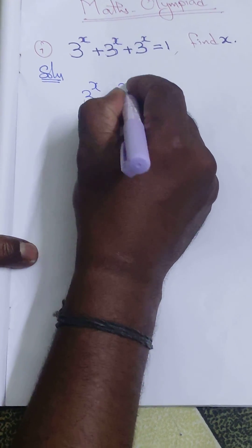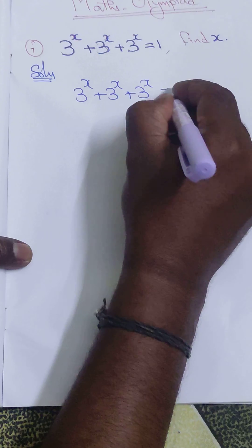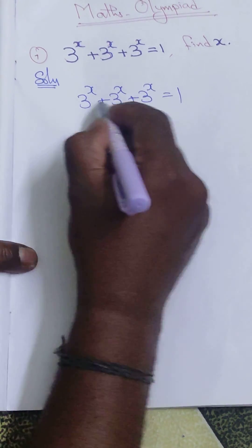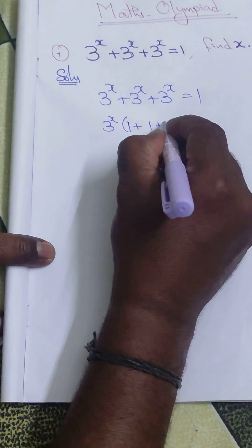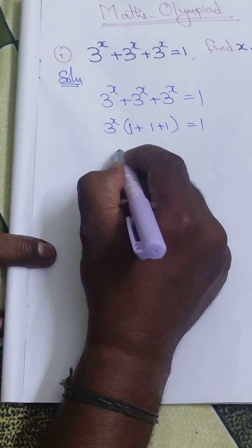Here 3^x is common, so we can take out 3^x(1 + 1 + 1) = 1. Therefore, 3^x × 3 = 1.